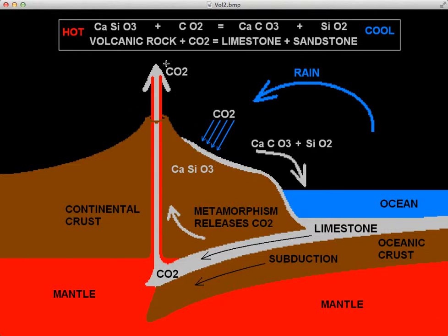The carbon dioxide gets emitted out of the volcano and goes into the atmosphere. Once it's in the atmosphere, it doesn't stay there — it will be recycled between the biosphere and the oceans, staying in that cycle for thousands of years. Eventually, it will be rained out. When the carbon dioxide dissolves in the rain, it will form a very weak acid known as carbonic acid.